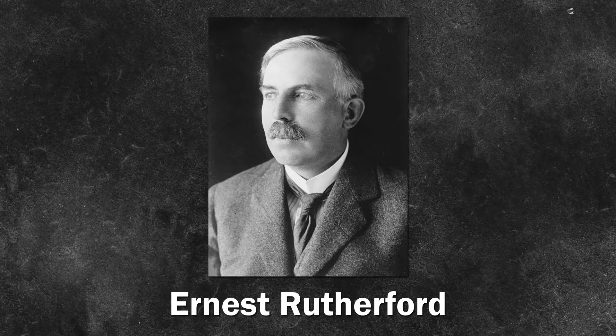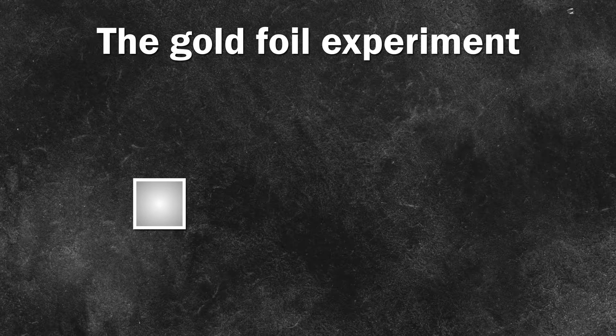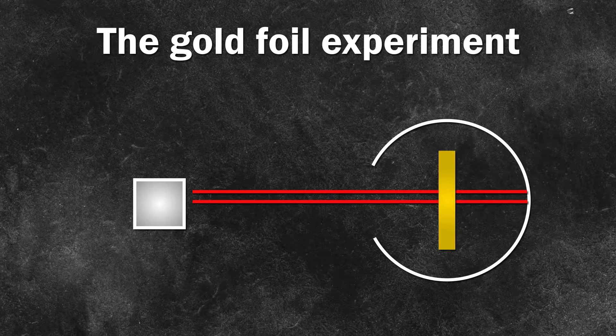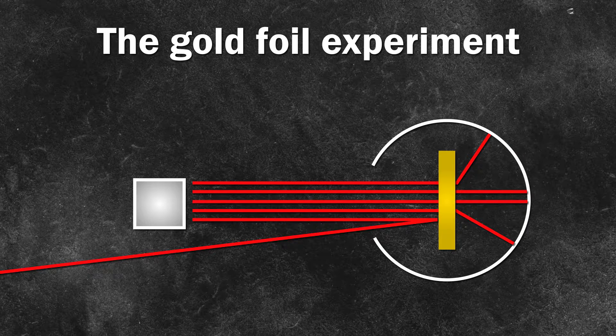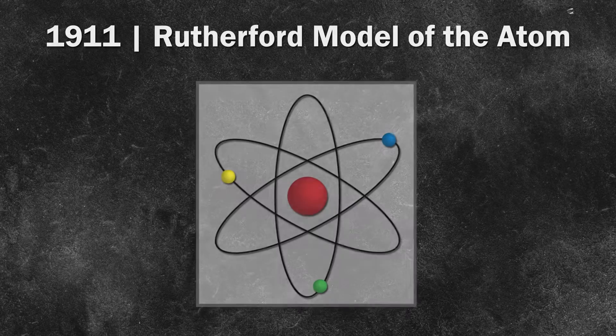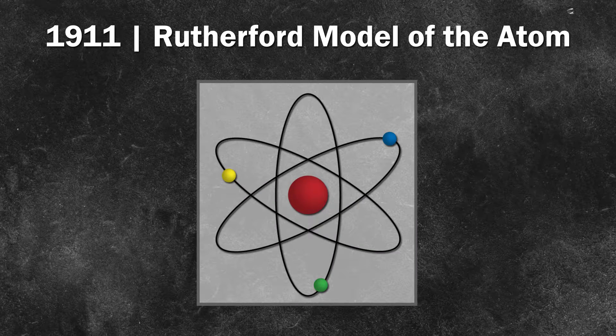Progress from this point onward happened astronomically fast, with our next breakthrough being only five years later in 1909. This is the year Ernest Rutherford, a former student of Thomson, discovered the positive nucleus and protons from his gold foil experiment. He shot alpha particles — which he would soon find out were just helium nuclei — at a thin sheet of gold foil surrounded by detectors. Most of his alpha particles shot straight through, but some deflected in other directions, and some even shot back towards the particle emitter. The only thing with that much repulsive force could be an equally dense and large positive substance at the center of each atom. He had not only discovered the nucleus, but that atoms were mostly empty space. By 1911 he developed his nuclear model, which featured negative electrons orbiting a positive nucleus like planets around the sun — the last classical atomic interpretation.